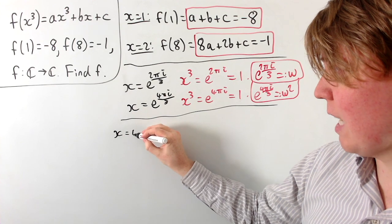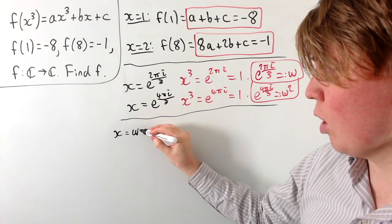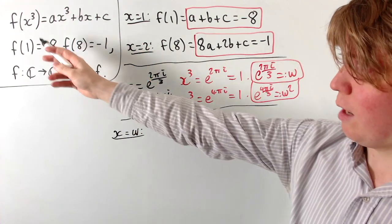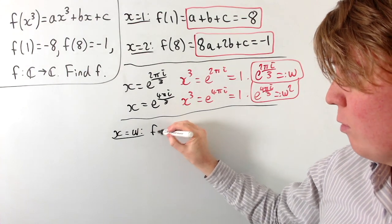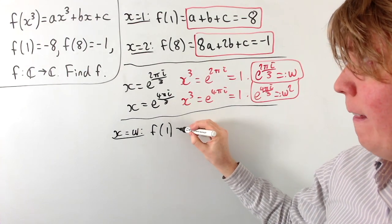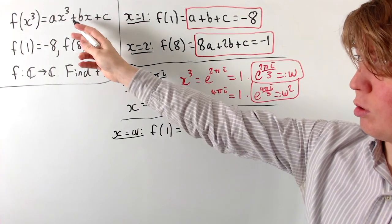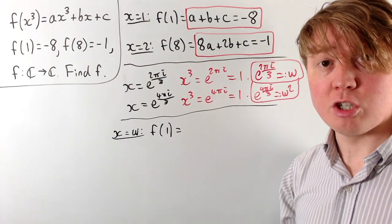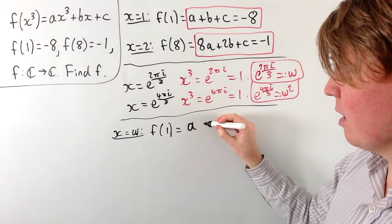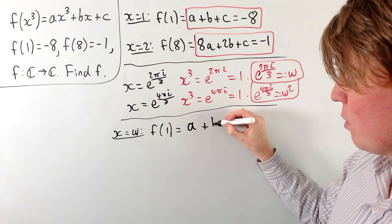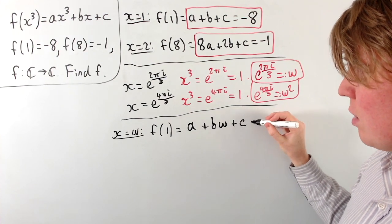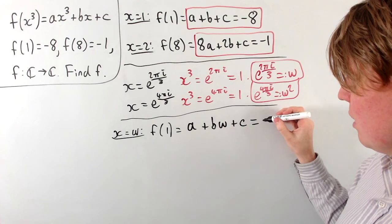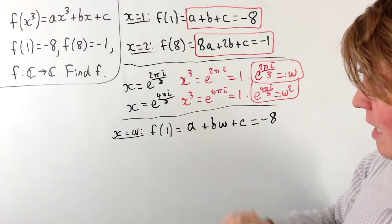Starting with x = ω and substituting into the functional equation: f(ω³) = f(1), still equals -8. On the right side, a times ω cubed is just a times 1, so we get a, plus b times ω, plus c. This gives us a third equation: a + bω + c = -8.